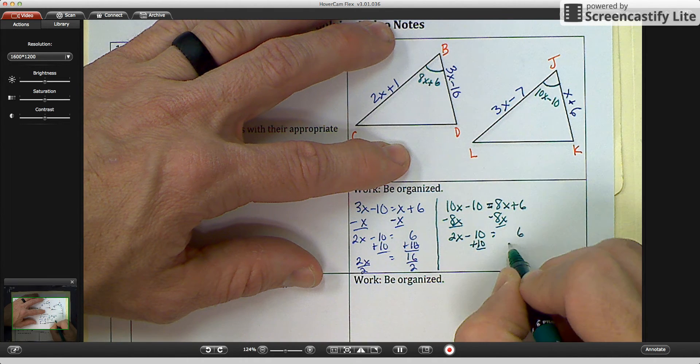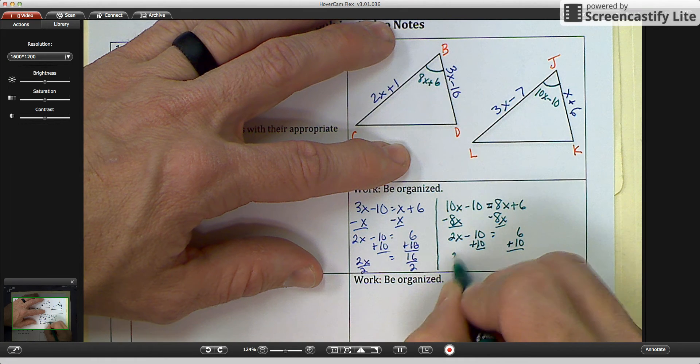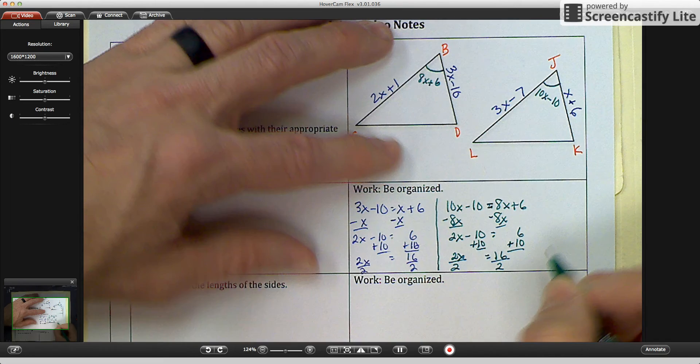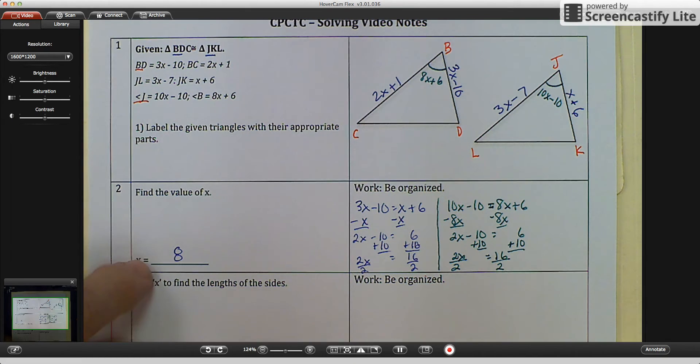And then solve that because they are congruent. Minus 8X. 2X minus 10 equals 6. Add 10. 2X equals 16. Divide by 2. And they are the same. X equals 8.